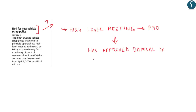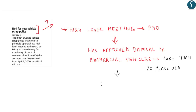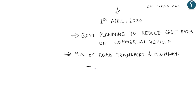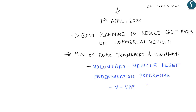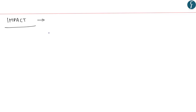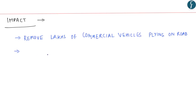The next news appears on page number 7. It reads: 'Nod for New Vehicle Scrap Policy.' In a high-level meeting at the Prime Minister's office, it has been approved that commercial vehicles more than 20 years old will be disposed of, to be implemented from 1st April 2020. The government is also planning to reduce GST on commercial vehicles. The Ministry of Road Transport and Highways had earlier made a concept note on a scheme known as the Voluntary Vehicle Fleet Modernization Program (VVMP), also aimed at scrapping old commercial vehicles. This move will effectively remove lakhs of old commercial vehicles from roads and will significantly reduce vehicular pollution.